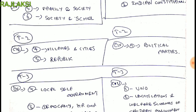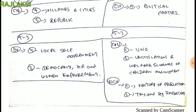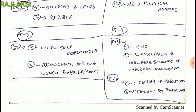6th term 2 — civics or politics, 4th and 5th units: villages and cities, republic. Term 3 — civics, 15th and 16th units: local self government, democracy, human resources and women empowerment.